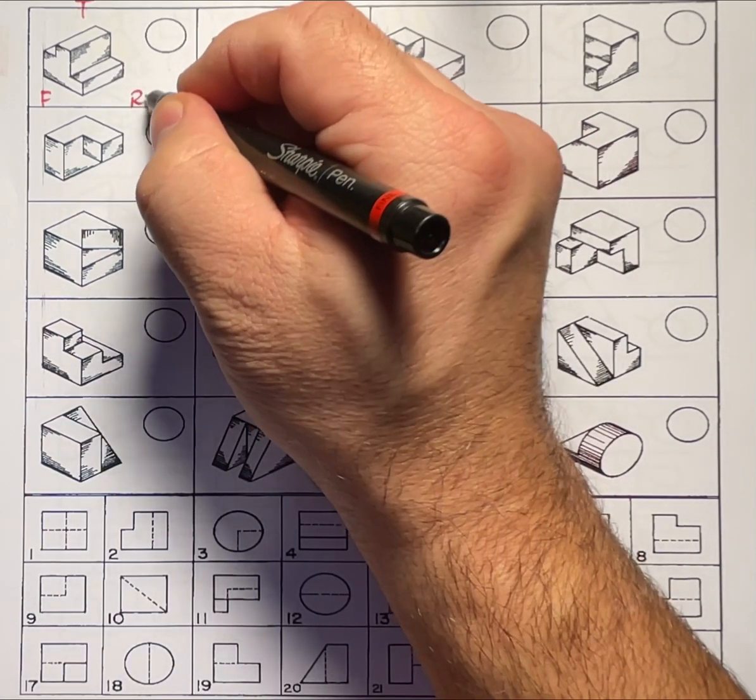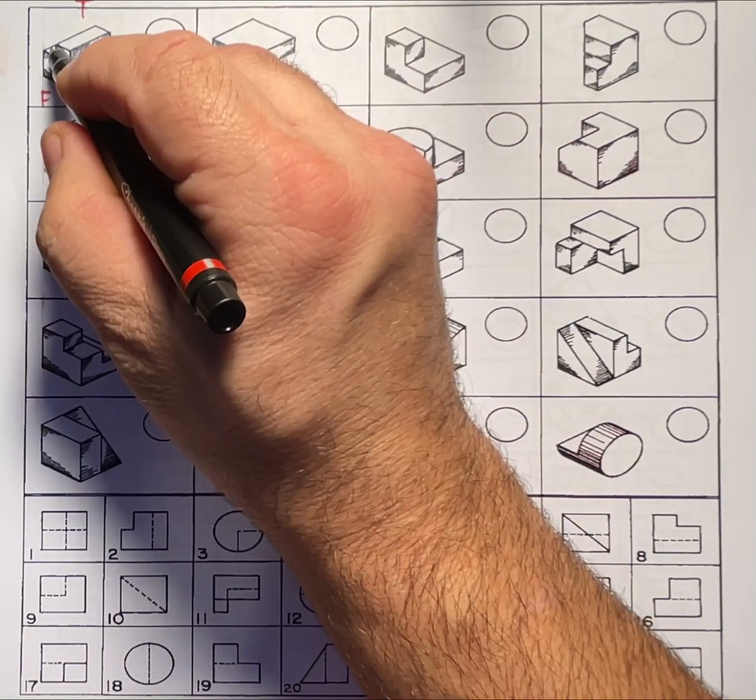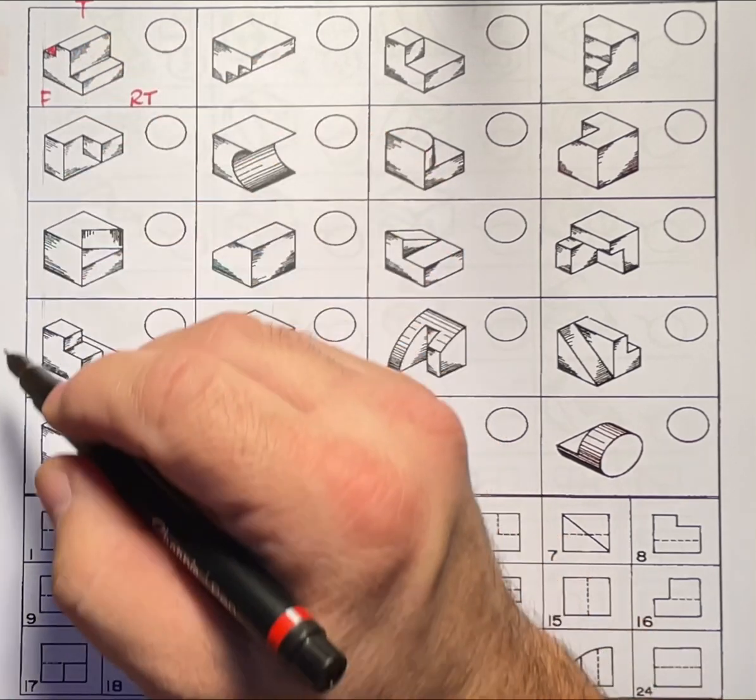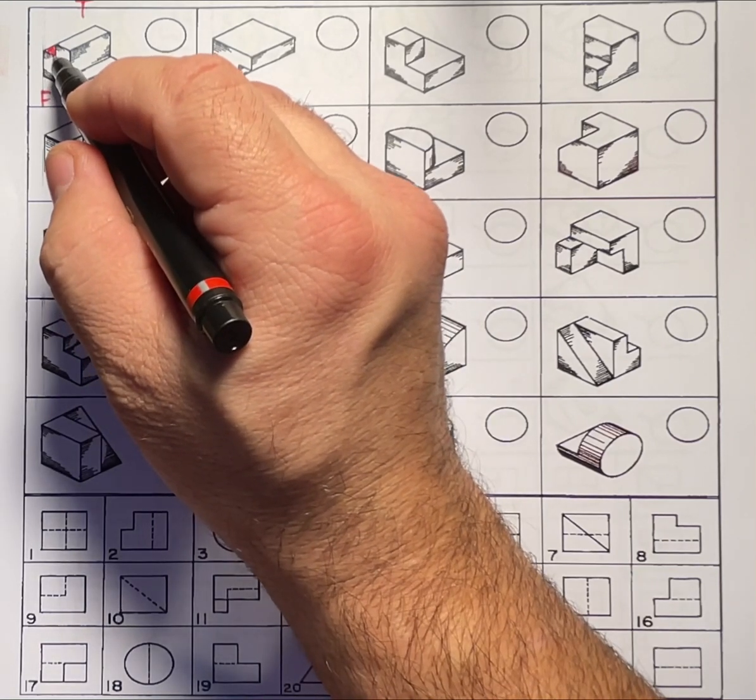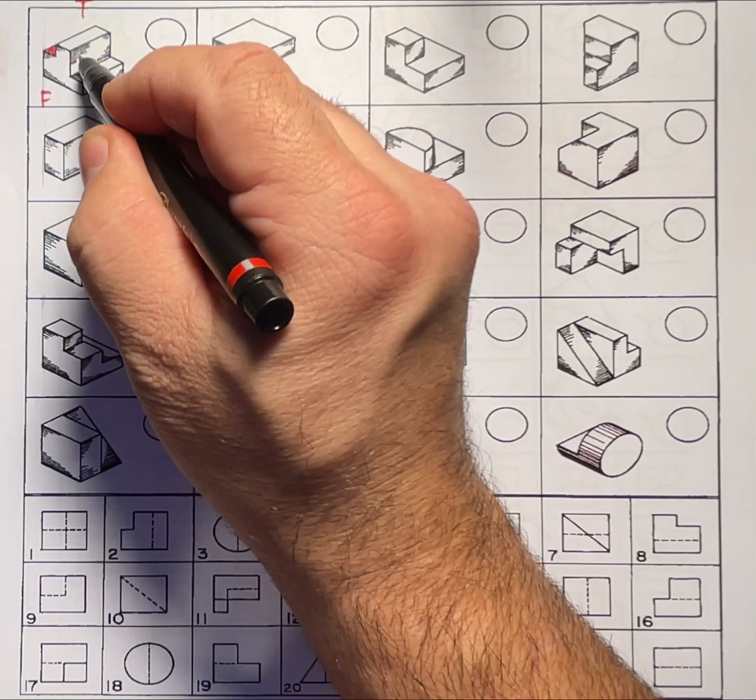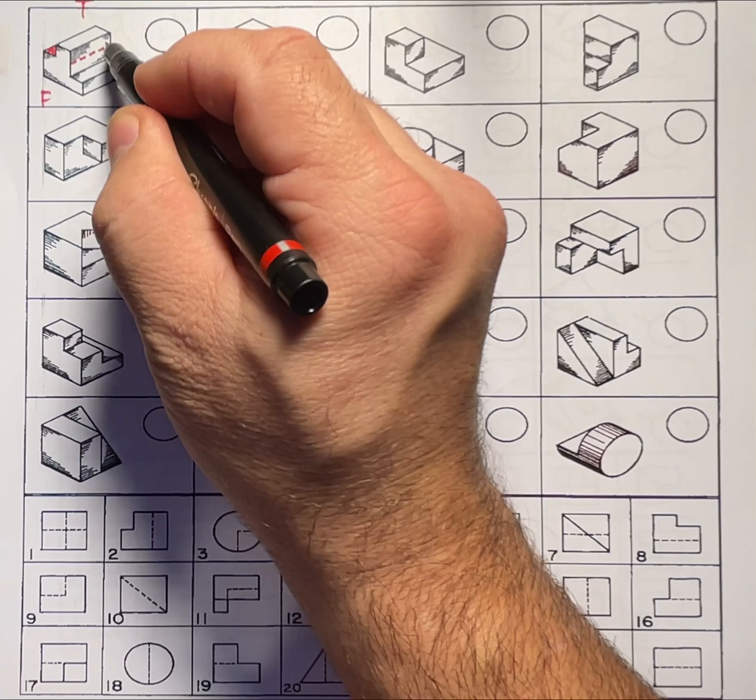So in the right side view I can see that there is a surface behind this one here. So how would I show that ledge? I would show it with a hidden line located right there.